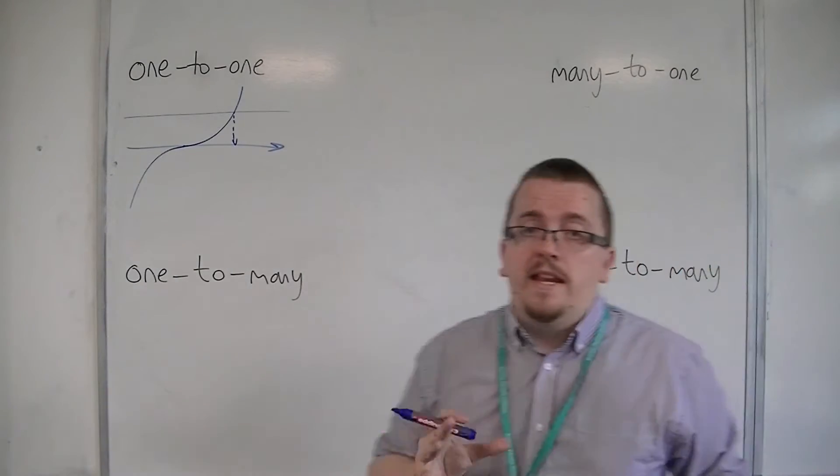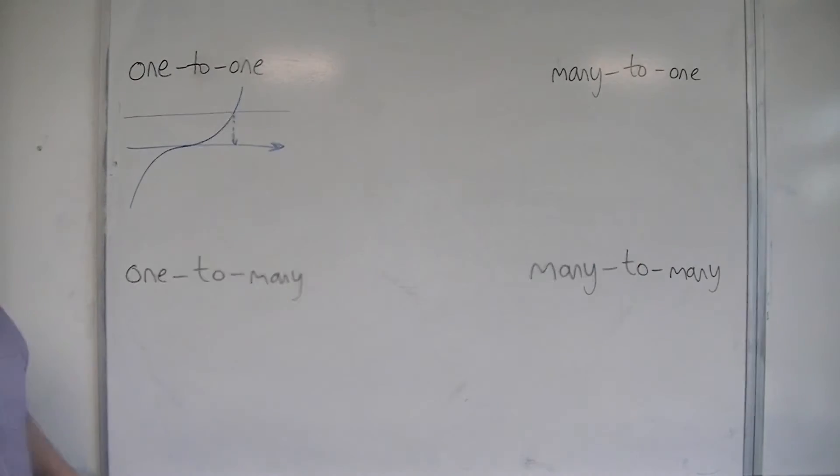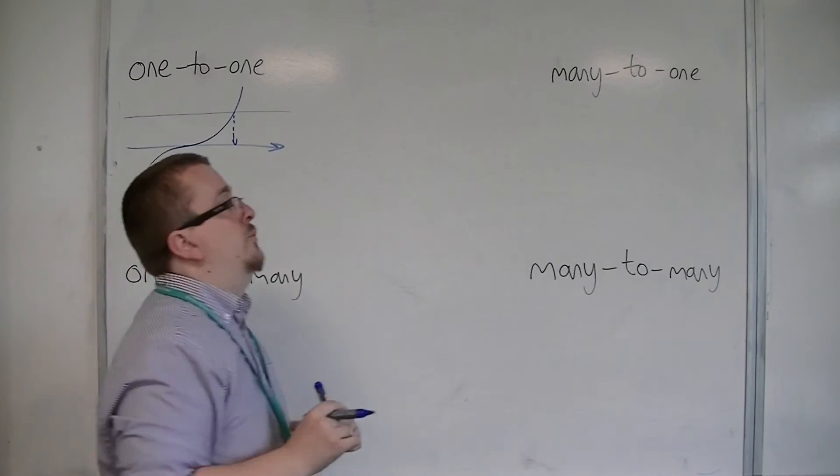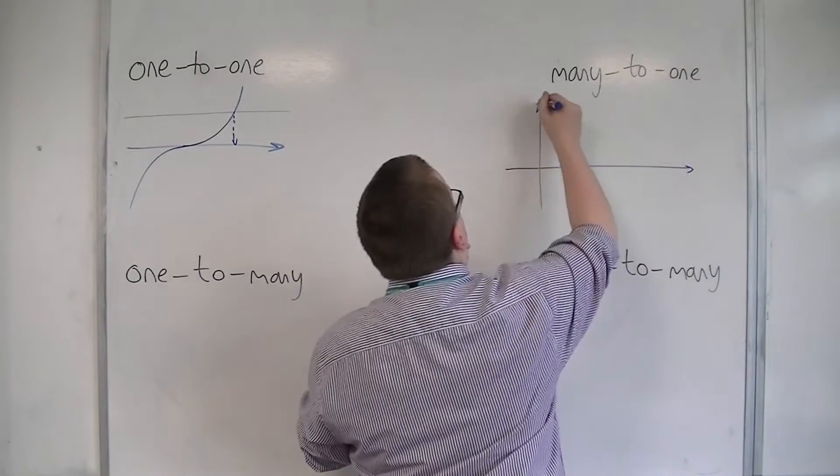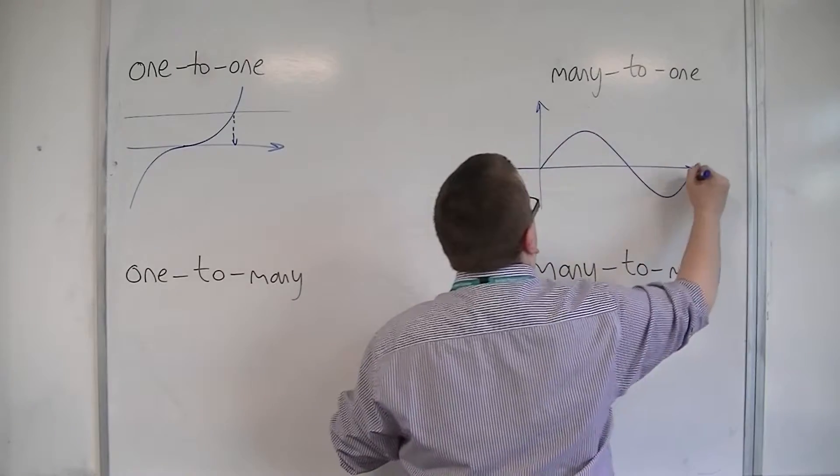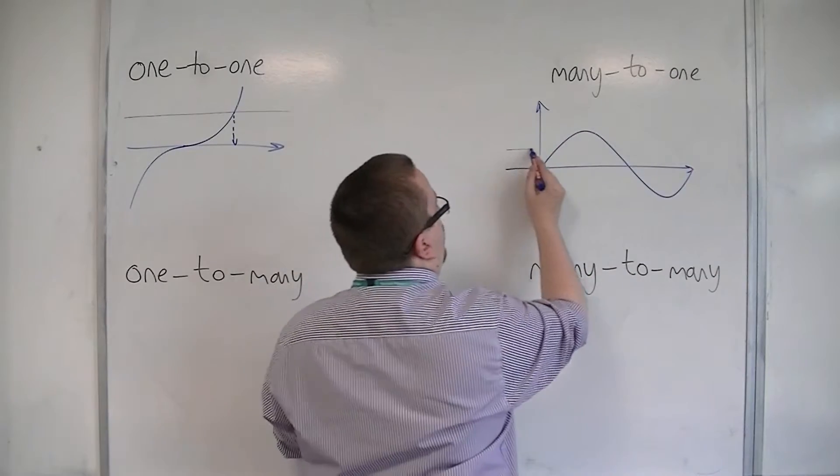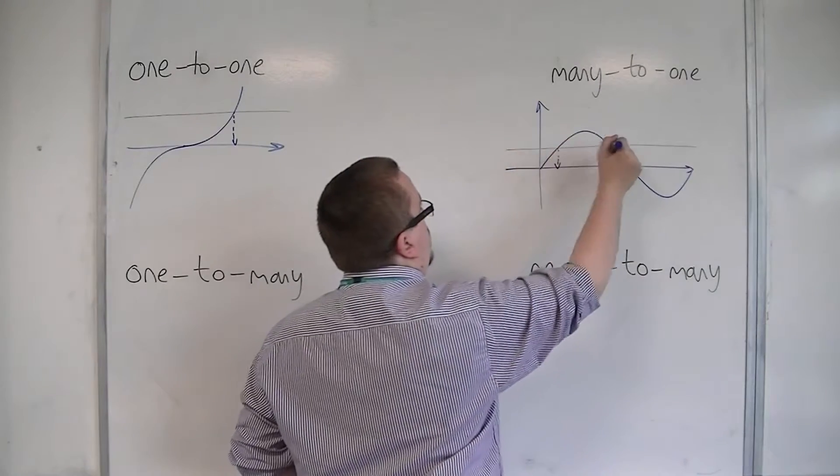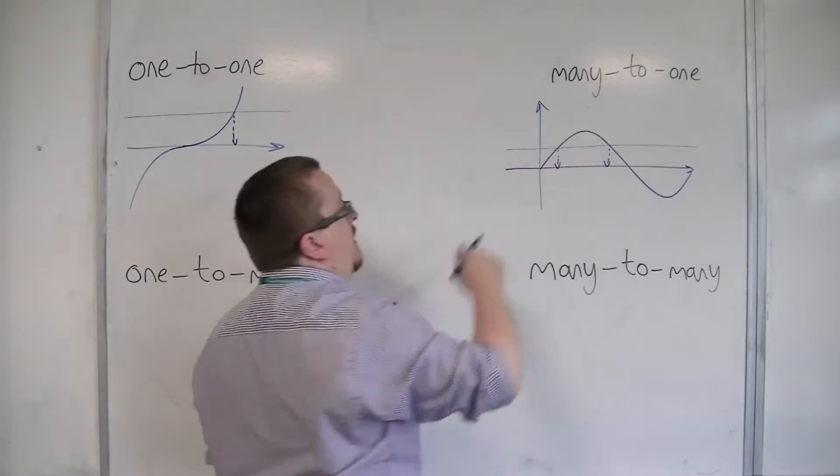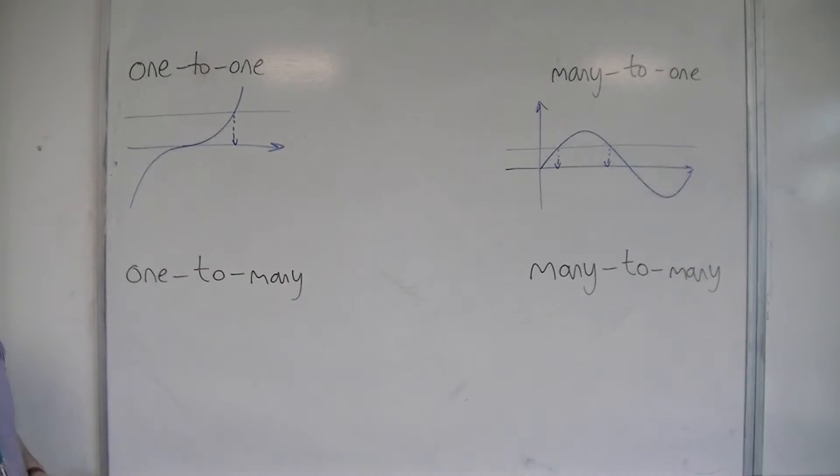For many to one, you're thinking about drawing that horizontal line, but you hit the curve several times. And so one such curve would be something like y equals sin x, because if I draw a horizontal line, I'm going to hit the curve in two places in this case. But if you keep on going, it's going to hit it infinitely many times.